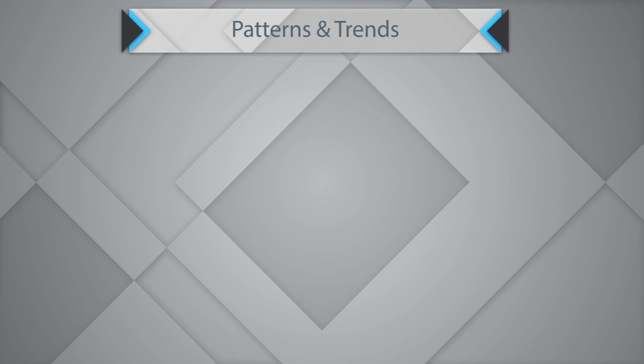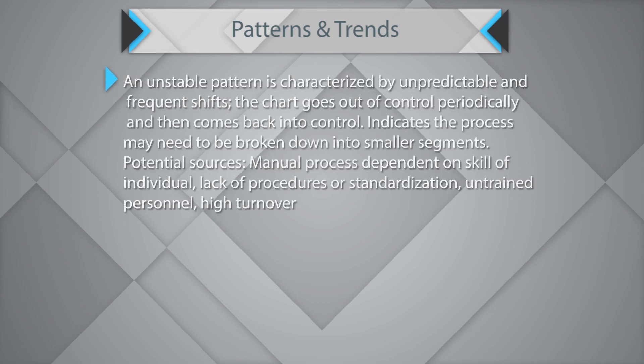An unstable pattern is characterized by unpredictable or frequent shifts — the chart goes out of control periodically and then comes back into control. This indicates that the process may need to be broken down into smaller segments. Potential sources could be a manual process dependent on individual skill, lack of procedures or standardization, untrained professionals, or high turnover.